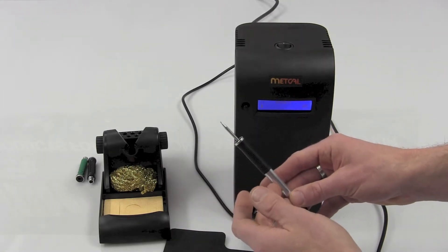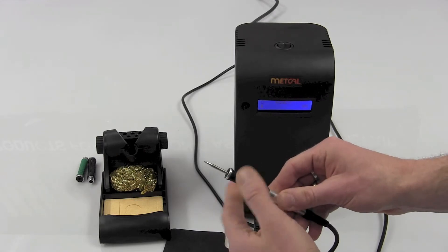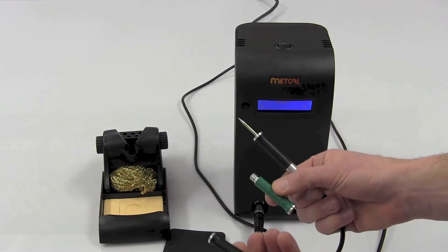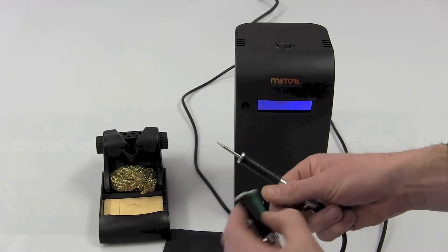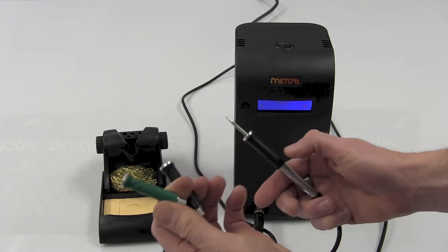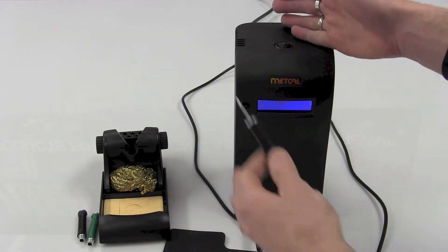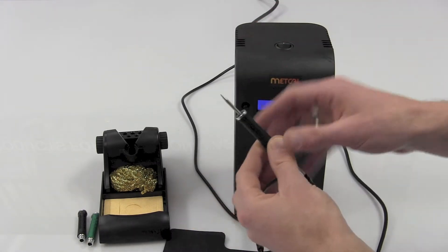It does have this new metal design body, also has the grips that can be changed in and changed out, which is one of the features of the new Metcal station. So you've got these nice textured grips, green obviously if you need a way to visually indicate RoHS. Obviously the station itself is fully capable of doing RoHS soldering.